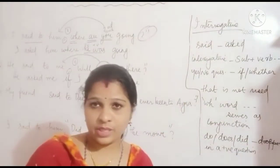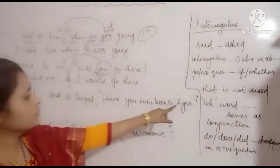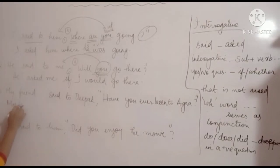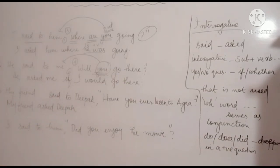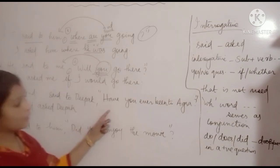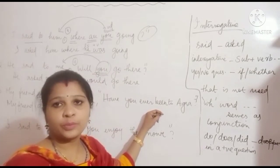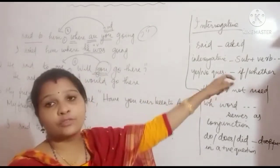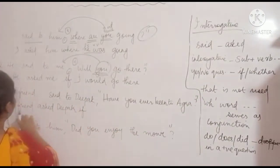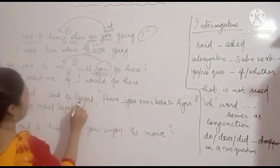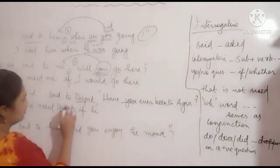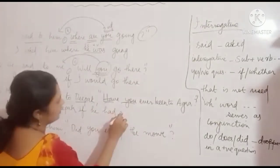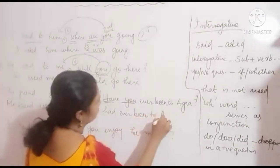Interrogative example 3: 'My friend said to Deepak, have you ever been to Agra?' 'Said to' becomes 'asked'. It is a yes/no question, so we use 'if'. 'You' changes according to the object — Deepak is masculine, so 'he'. 'Have' changes to 'had'. Answer: My friend asked Deepak if he had ever been to Agra.